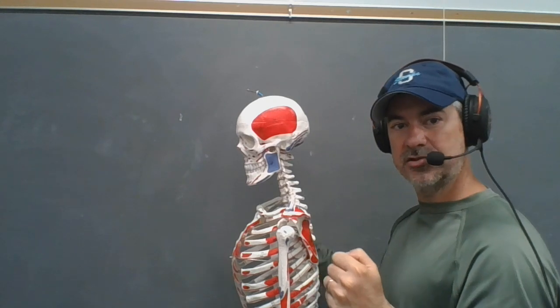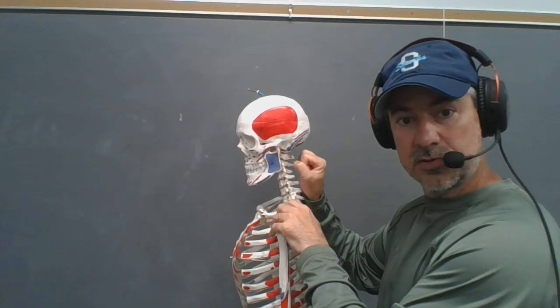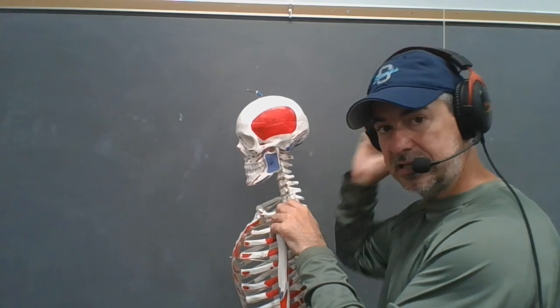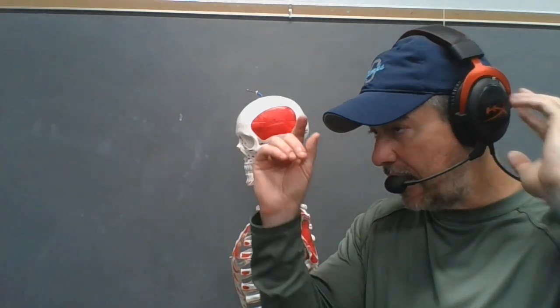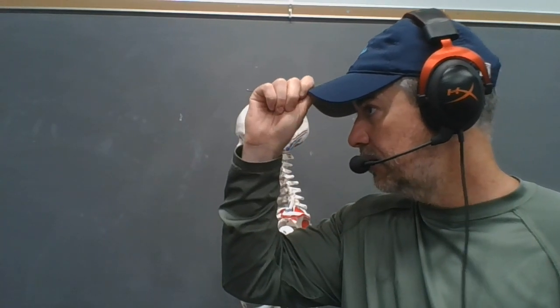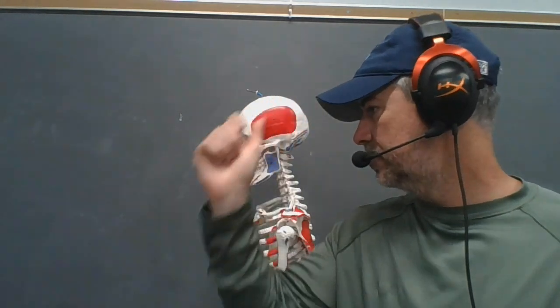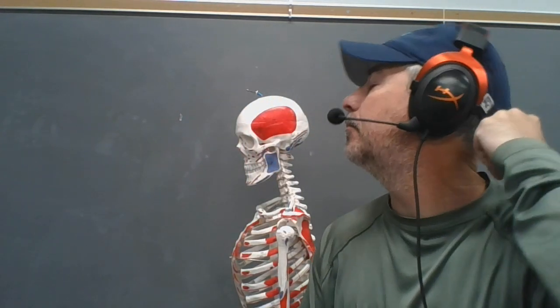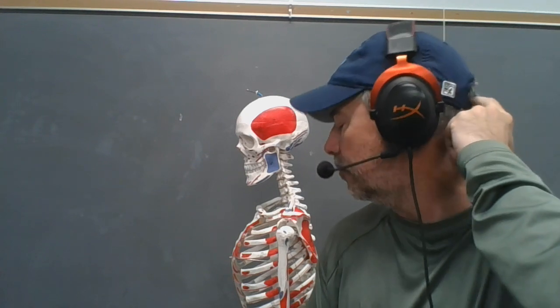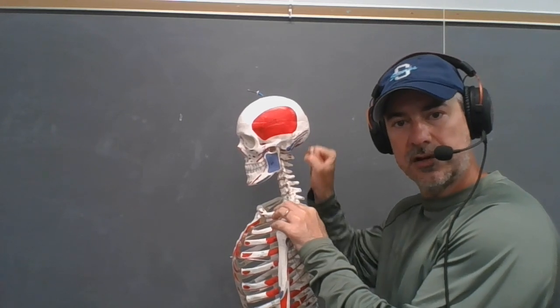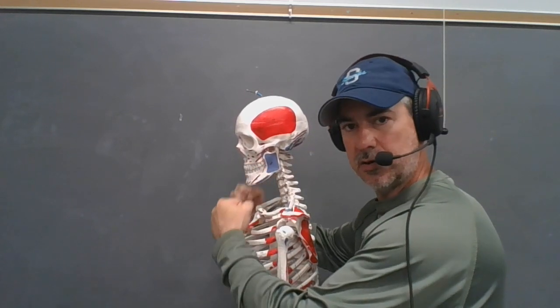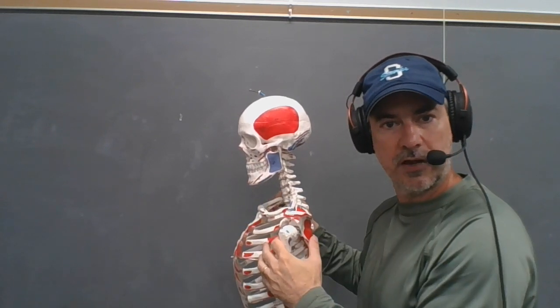I'm going to have two main muscles that pull the skull anteriorly in a direction of cervical flexion. Then I'm going to have muscles posterior that pull in the direction of cervical extension. Using my cap as an analogy: pulling on the anterior part of my cap forward pulls in a direction of cervical flexion; pulling on the back of my cap posteriorly pulls in the direction of cervical extension. Posterior crossing muscles pull in the direction of cervical extension, anterior crossing muscles produce cervical flexion.